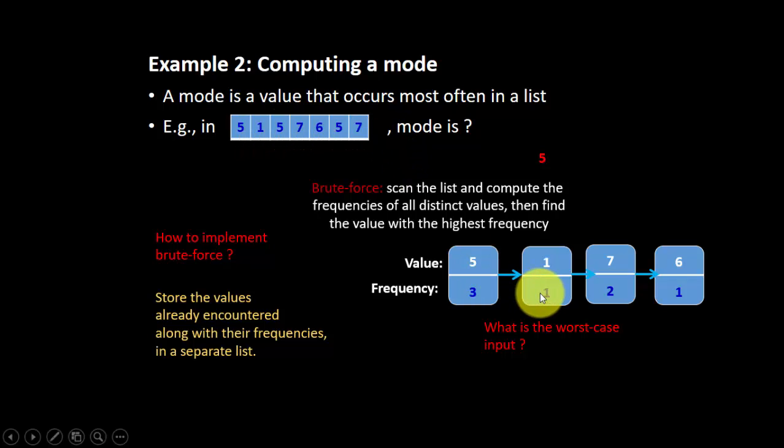Store it in the frequency list, and then we go to the next element, 5, already have it here, then go to the next, 7, and so on.